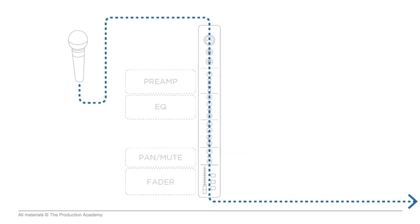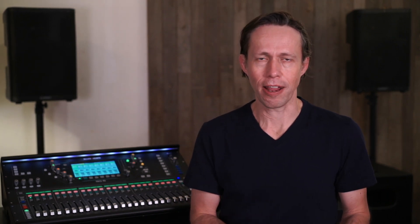So when we plug an input into the console, the signal runs through the channel strip. What aux sends do is pick off the signal and send it to an auxiliary output. Some manufacturers do use different terminology — like Yamaha consoles say 'mix' instead of 'aux' — but they mean the same thing.